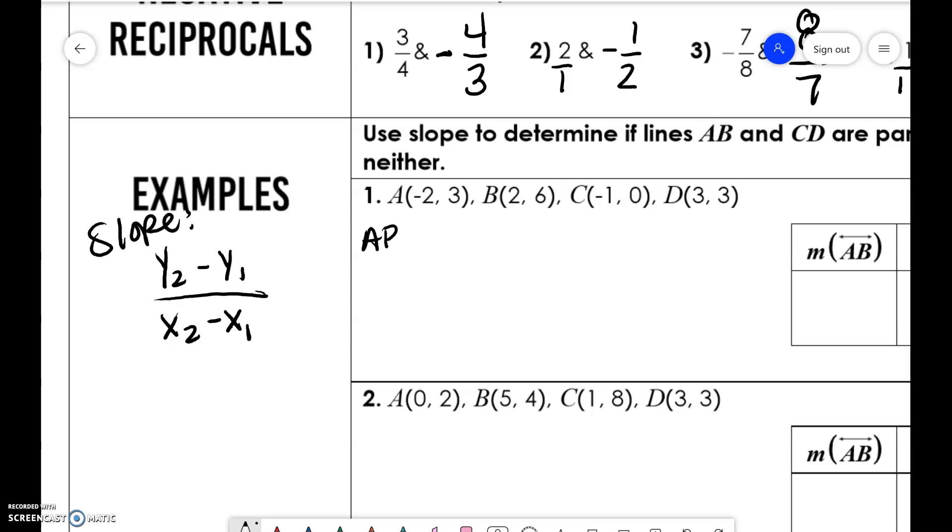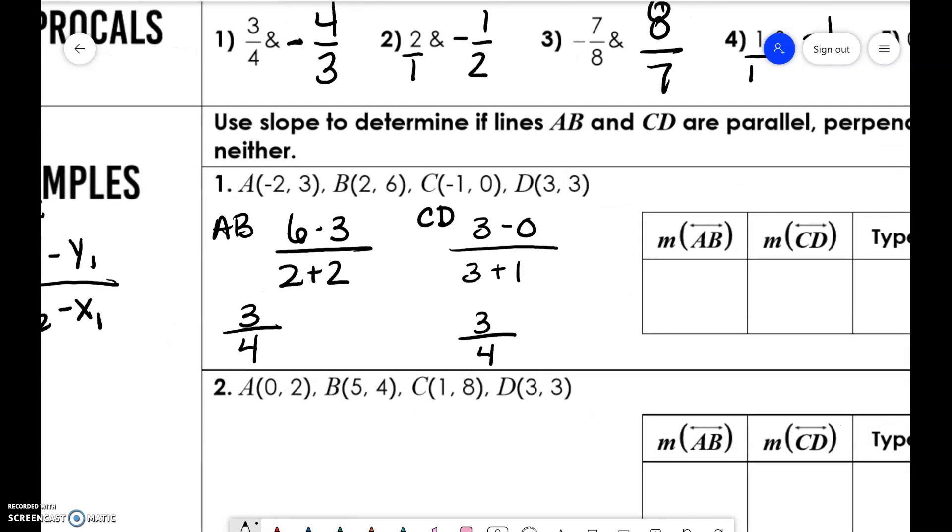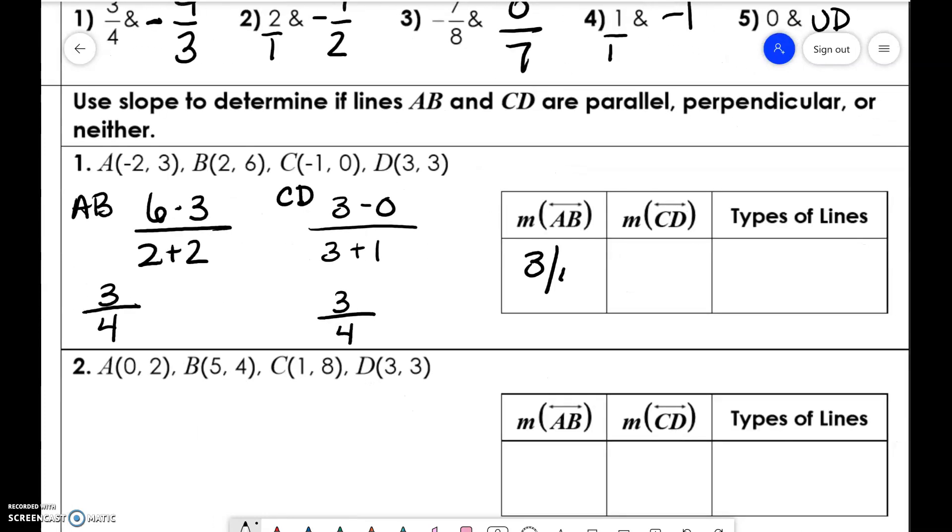For AB, we're doing 6 minus 3 over 2 plus 2, because it's 2 minus negative 2. So 6 minus 3 is 3, 2 plus 2 is 4. For CD, we have 3 minus 0 over 3 plus 1. So 3 minus 0 is 3, and 3 plus 1 is 4. These slopes are the same, 3 over 4 and 3 over 4, so those are parallel lines.